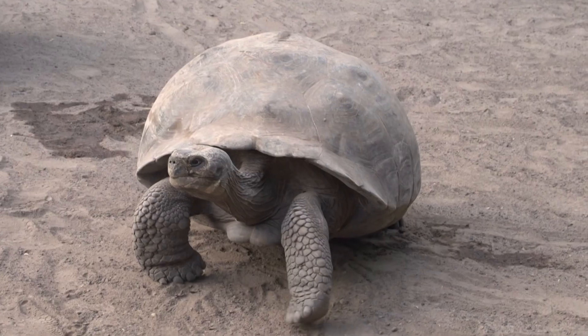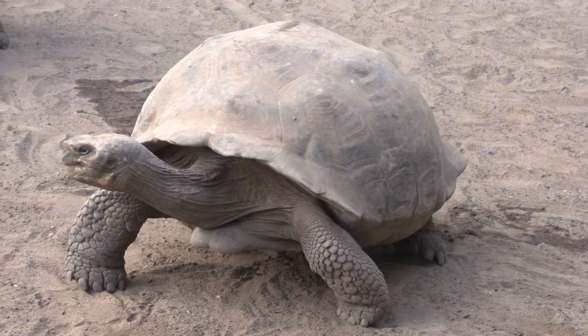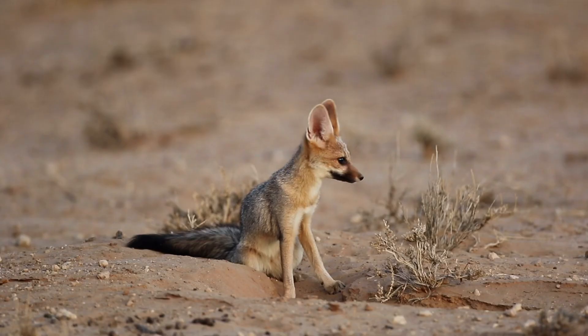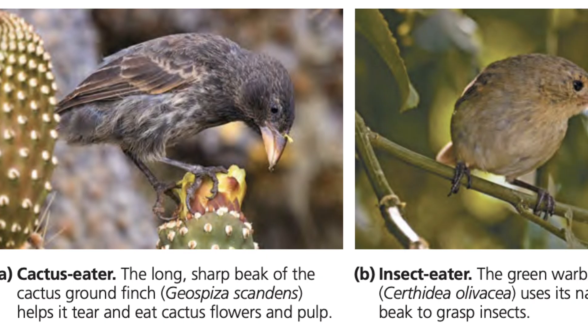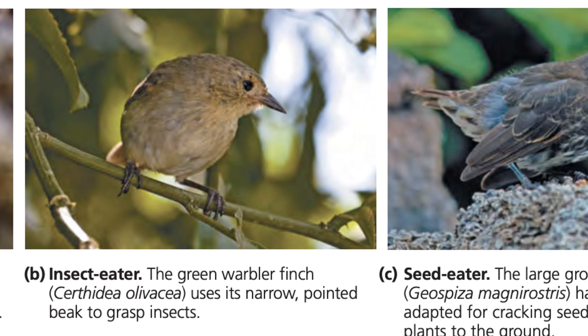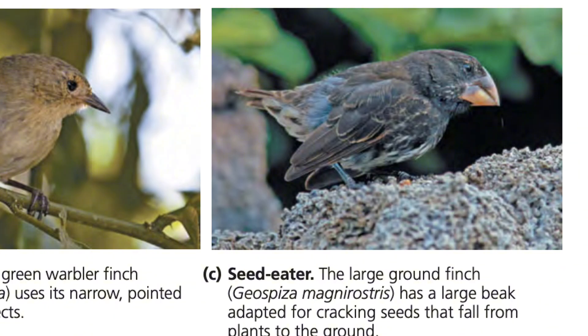Darwin's initial goal was to explain the various adaptations he observed in different organisms around the world — features that allow a species to survive in its environment, such as the big ears that dissipate heat in desert foxes. While the common consensus was that a creator crafted these adaptations, Darwin wanted to know if there was a naturalistic explanation. Many are familiar with Darwin's finches, whose beaks differ based on their environments, but it's more important to understand how Darwin reasoned out natural selection at a fundamental level.